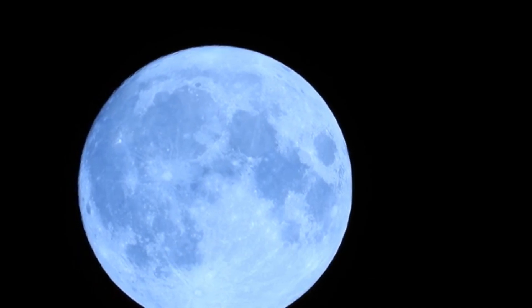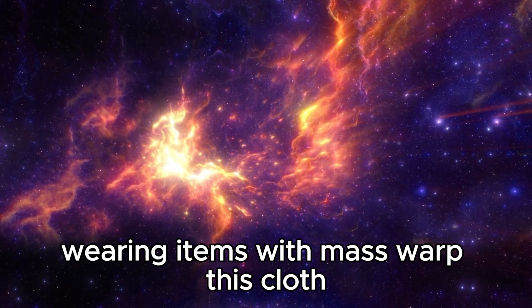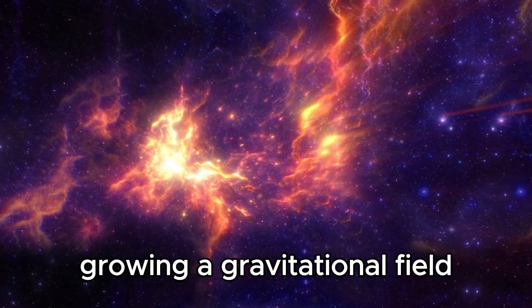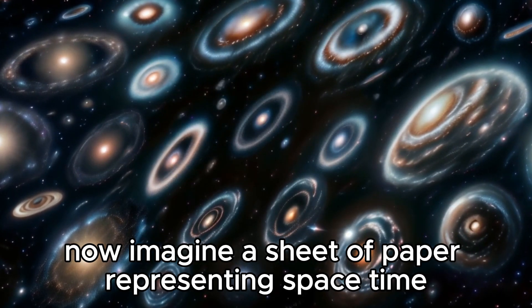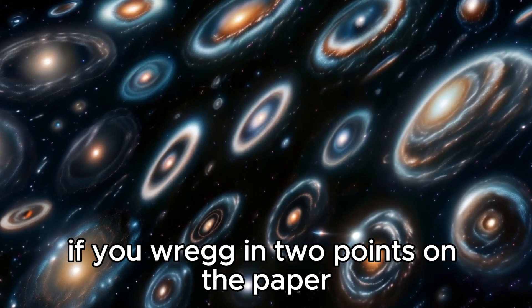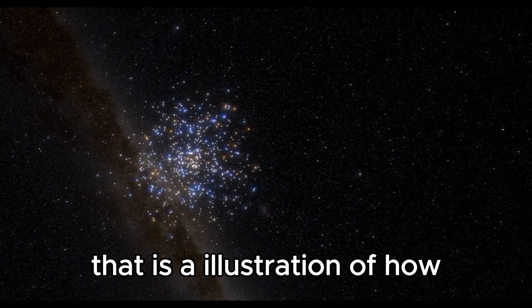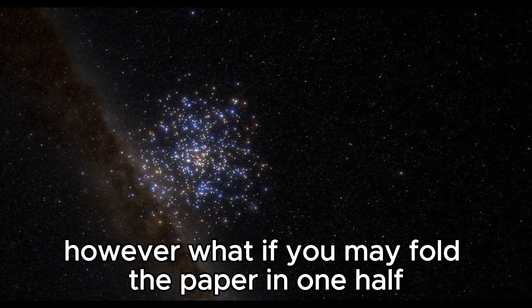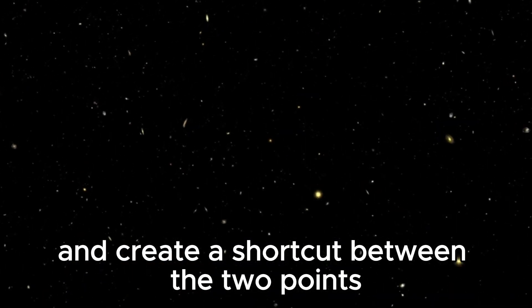In Einstein's theory, spacetime is the fabric of the universe in which objects with mass warp this fabric, creating a gravitational field that causes other objects to move towards them. Now imagine a sheet of paper representing spacetime. If you pick two points on the paper and draw a line between them, that is an illustration of how objects move through spacetime. However, what if you could fold the paper in half and create a shortcut between the two points?